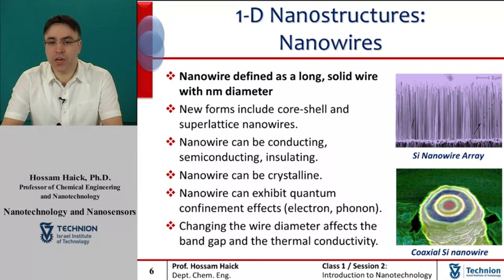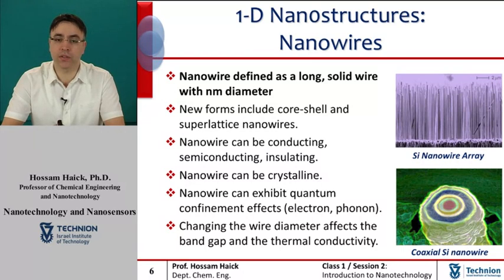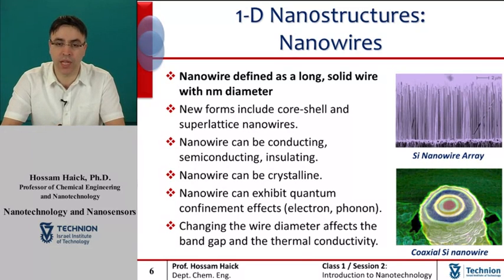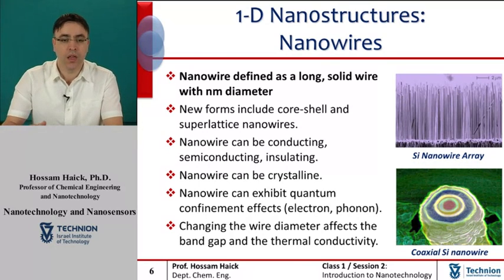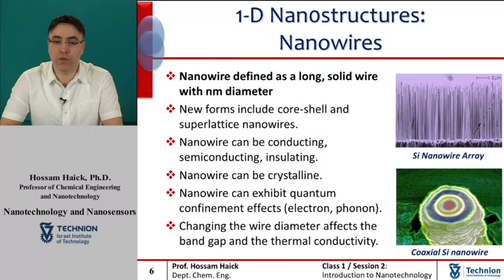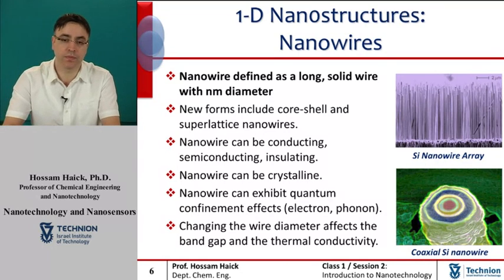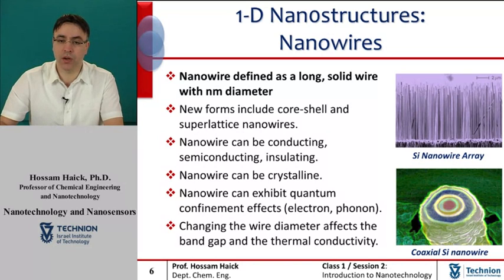Many different types of nanowires exist. These include metallic nanowires, semiconducting nanowires, and insulating nanowires. Molecular nanowires are composed of repeating molecular units, either organic — for example, DNA — or inorganic material. New forms of nanowires include core-shell superlattice nanowires, as seen in the bottom figure on the slide.